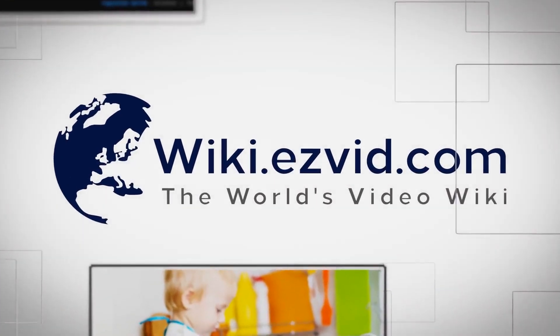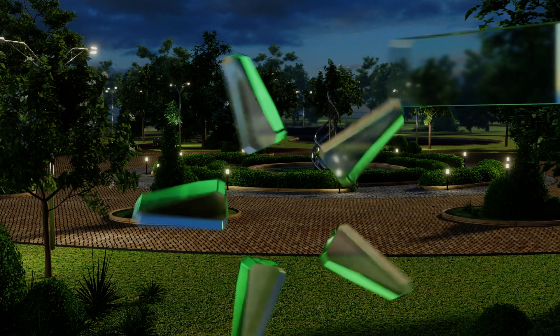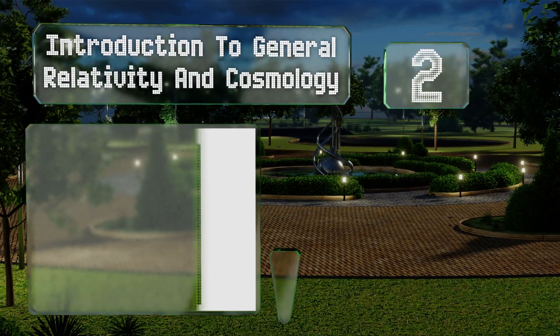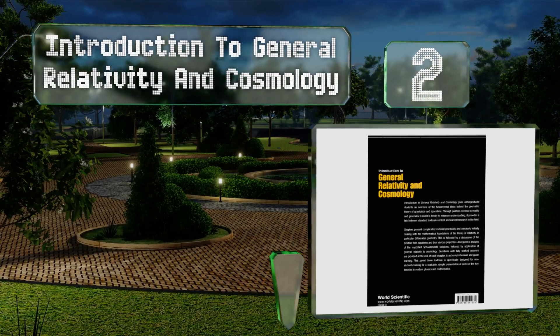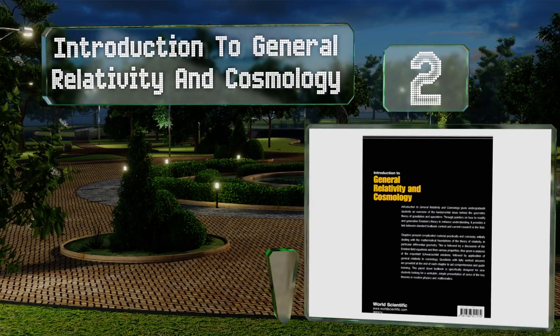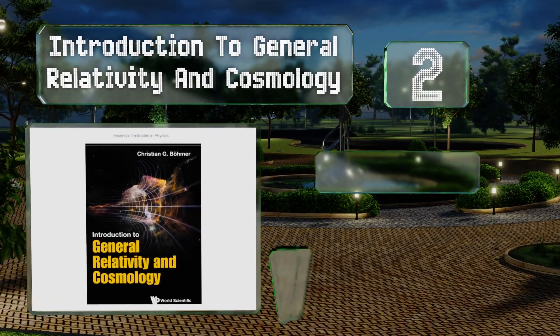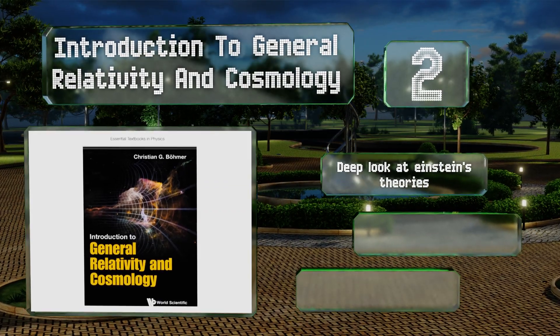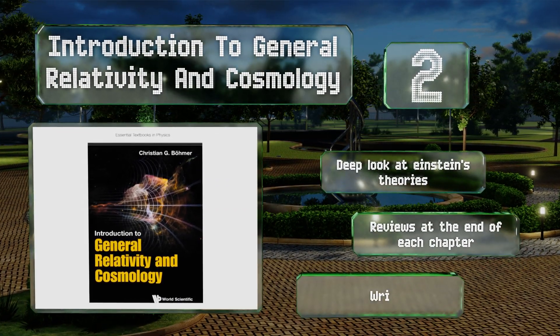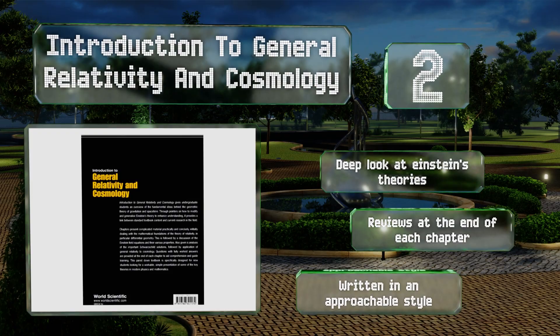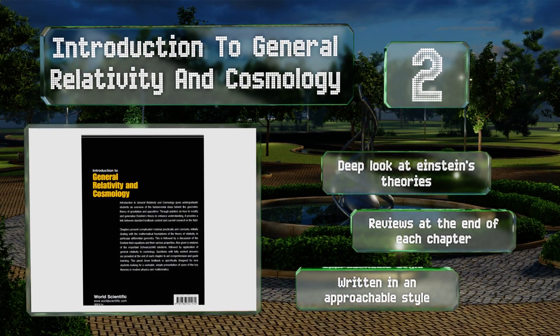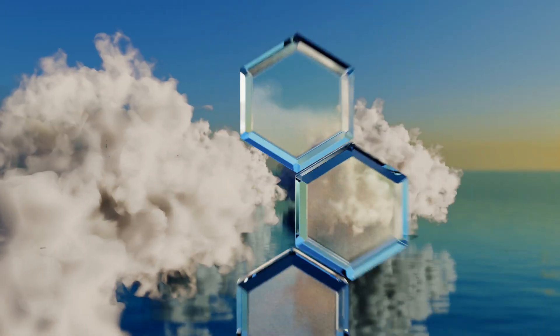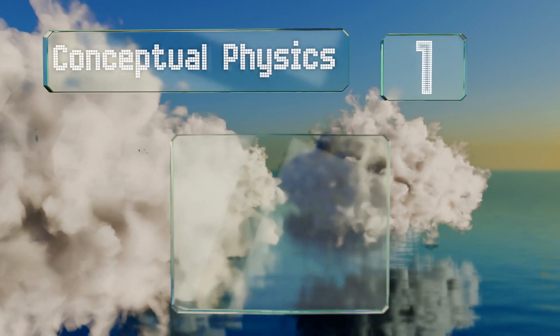At number two, Introduction to General Relativity and Cosmology by Christian G. Böhmer places an emphasis on the physical realities of the universe and space-time. As such, it's a great way to engage students with the field, as it focuses on the stars. It takes a deep look at Einstein's theories, and there are reviews at the end of each chapter. It's written in an approachable style.